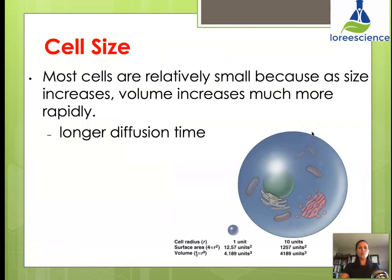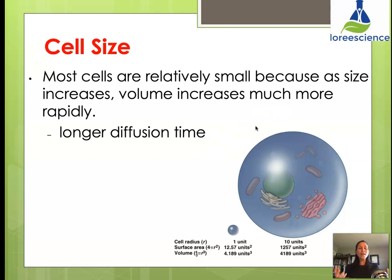When talking about cells, we are talking about things that are very, very small. The reason they have to be so small is that cells get their nutrients and transport wastes through diffusion. Diffusion is a really slow process, so if the cell is too big it will take far too long to get nutrients in and get rid of wastes — which could damage the cell or cause it to starve. Cells are small because they want to increase their surface area but decrease their volume.